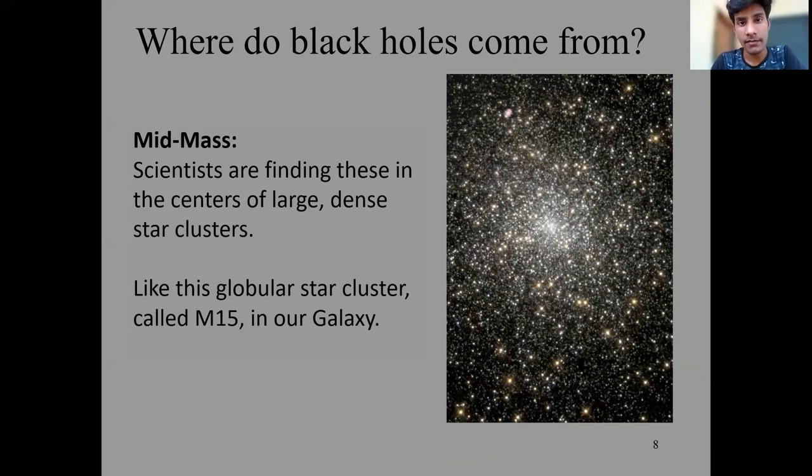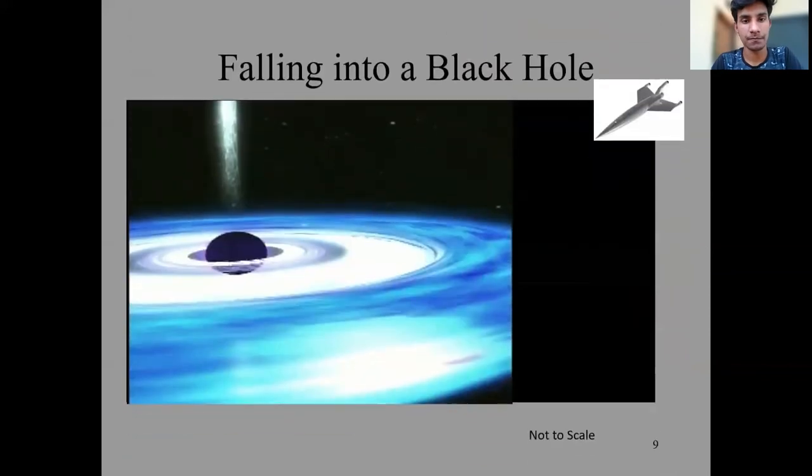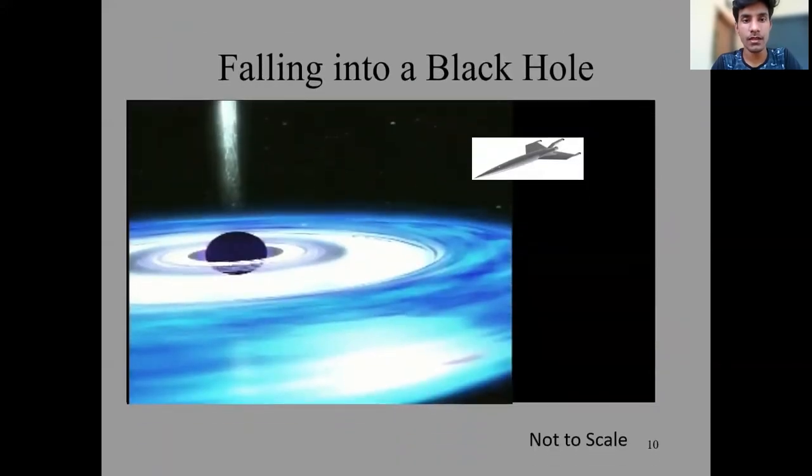In the next slide, we see how black holes disappear an object and how it escapes an object. Let's see. In this graph, we see a black hole and a square spaceship that is out of the range of the black hole. As the object comes nearer to the black hole, it will get disappeared and it gets smeared in size and gets totally attracted towards the black hole.